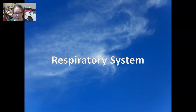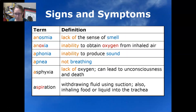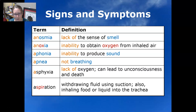Hi, this is Dr. A, and in this medical terminology video we're going to go over the signs and symptoms of the respiratory system. Anosmia is the lack of sense of smell. Anoxia is the inability to obtain oxygen from inhaled air. Aphonia is the inability to produce sound, and apnea is not breathing.